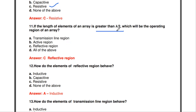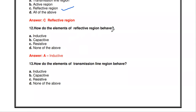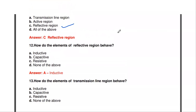If the length of elements is greater than lambda/2, which is the operating region? That is the reflective region. In the reflective region, dipole elements have length greater than lambda/2. In the active region, element length is approximately lambda/2. In the transmission line region, element length is less than lambda/2.